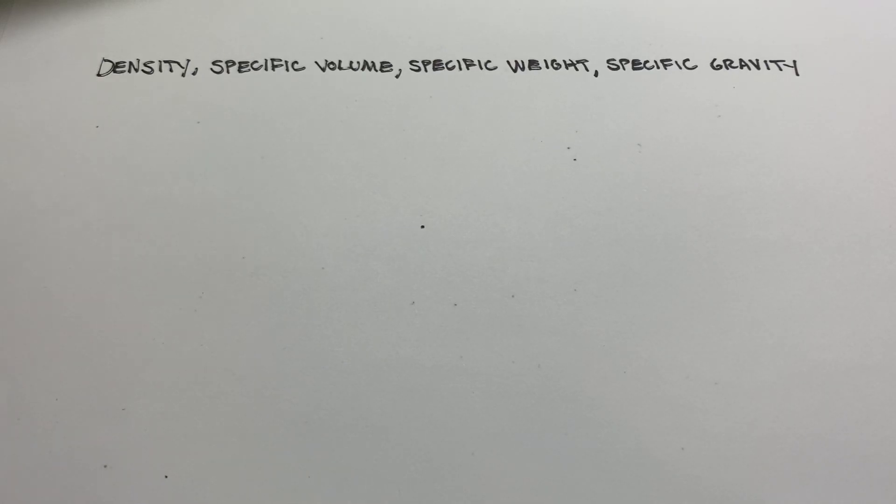Density, specific volume, specific weight, and specific gravity are all terms that are incredibly common in different science and engineering applications. Some of them more common than others, depending on circumstances we'll talk about, but for a long time I had a little bit of confusion, not enough that I couldn't apply them correctly, but I think I didn't fully understand exactly what some of these things were. This is just hoping to clear up any confusion that someone might have about some of these terms.